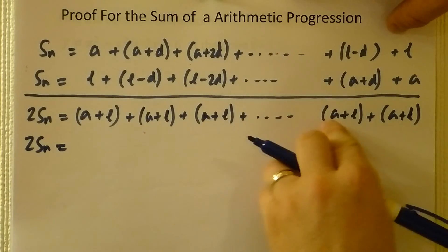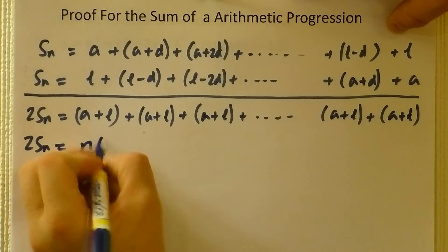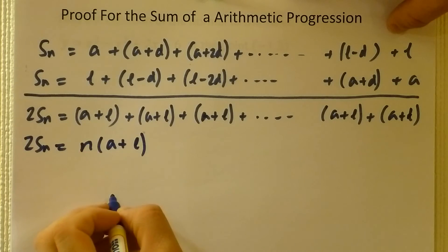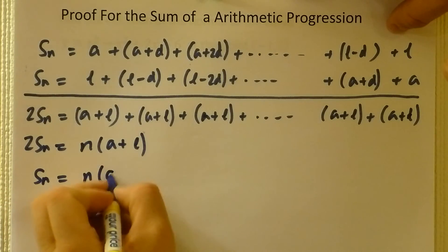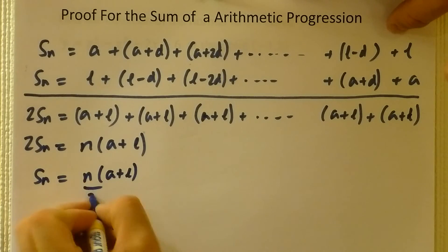Now here, I would have had n lots of a plus l, so this sum is equal to n times a plus l, divided by 2.